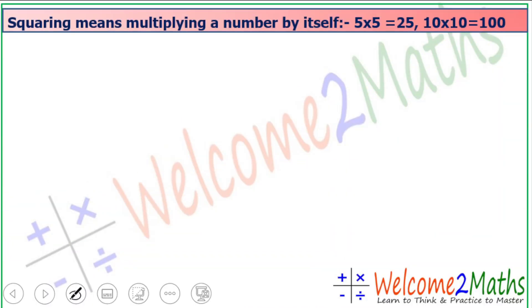What is the square of any number? Squaring means multiplying a number by itself, just like 5×5=25, 10×10=100. Similarly, 7×7=49. Whenever we multiply a number by itself, it's called square.